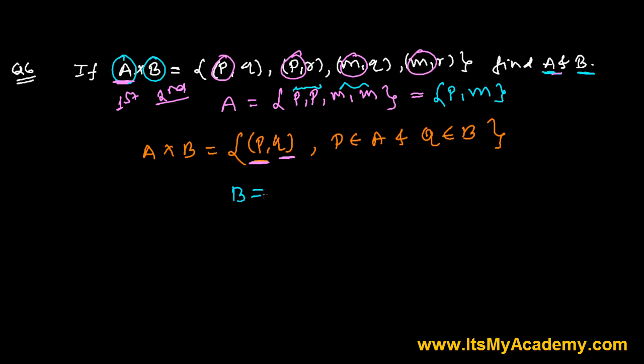Similarly, let's write the set B. B is the set of element which is in the second position in the order pair. So Q, R, Q, R. We have here now Q, R, Q, R. And as I told you, repetition is not allowed in set. So it's going to be Q and R simply. So we got our answer. Our set A is {P, M} and set B is {Q, R}. That's it.